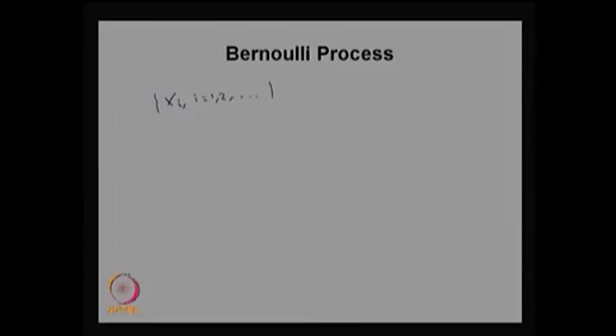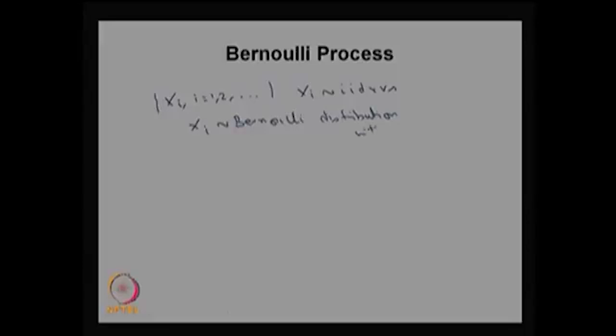What is a Bernoulli process? A Bernoulli process can be created by a sequence of random variables. Suppose you think of random variables Xi where i takes the values 1, 2, and so on. This is going to be a collection of random variables, and each Xi is an iid random variable coming from Bernoulli trials. That means each random variable is Bernoulli distributed with the parameter p.